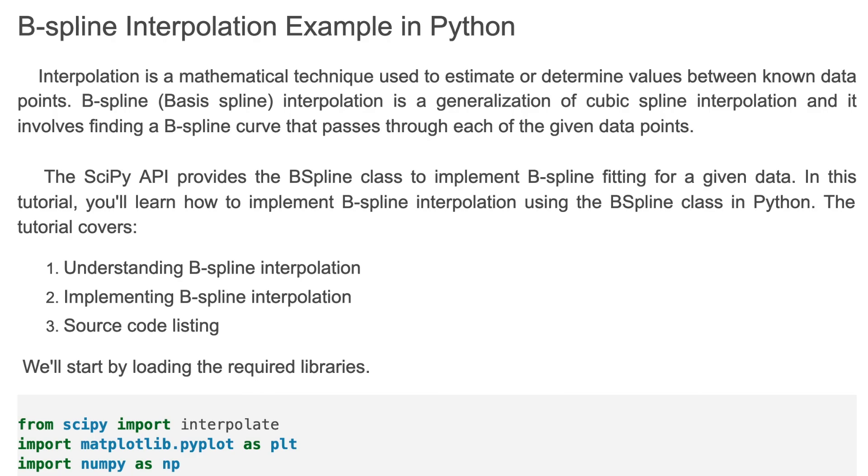Interpolation is a mathematical technique used to estimate or determine values between known data points. B-spline, or basis spline interpolation, is a generalization of cubic spline interpolation and it involves a B-spline curve that passes through each of the given data points.